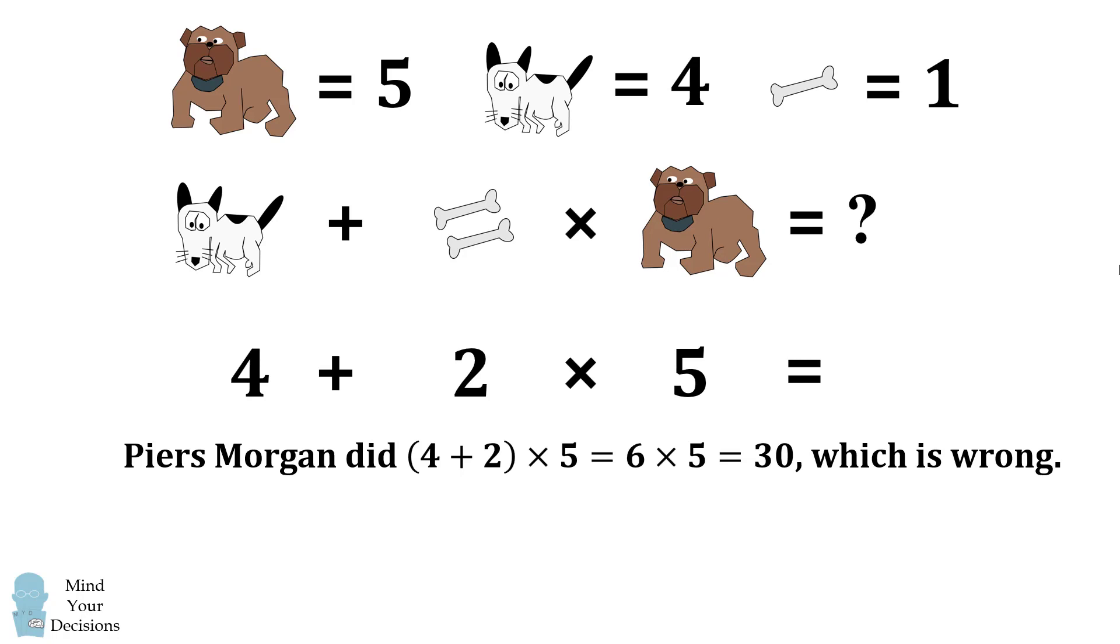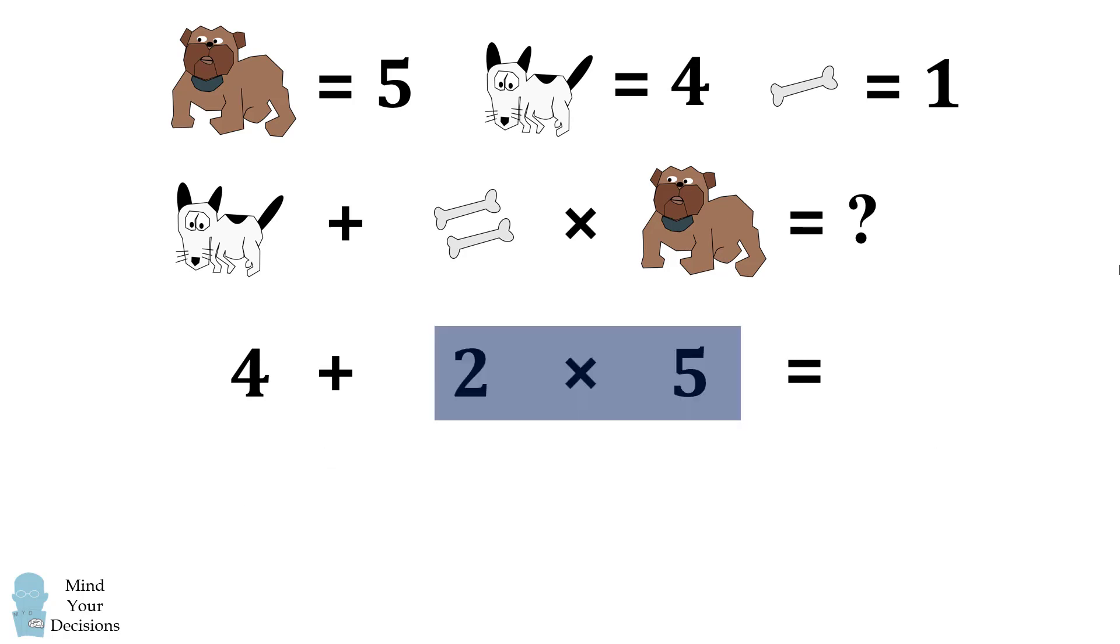This is the incorrect answer because you're supposed to use the order of operations. According to PEMDAS or BODMAS, you need to do multiplication before addition. In that case, we need to do two times five first. We have four plus ten and that gets us to the correct answer of fourteen.